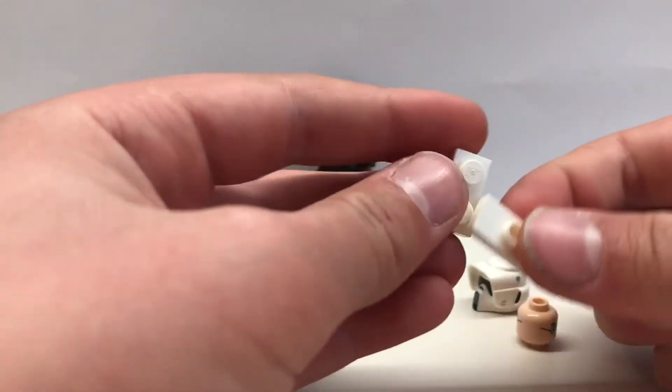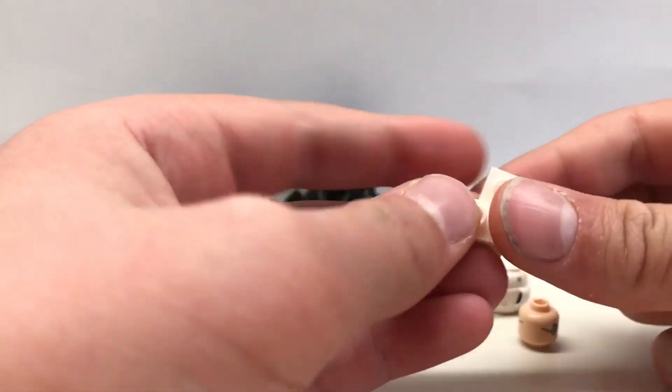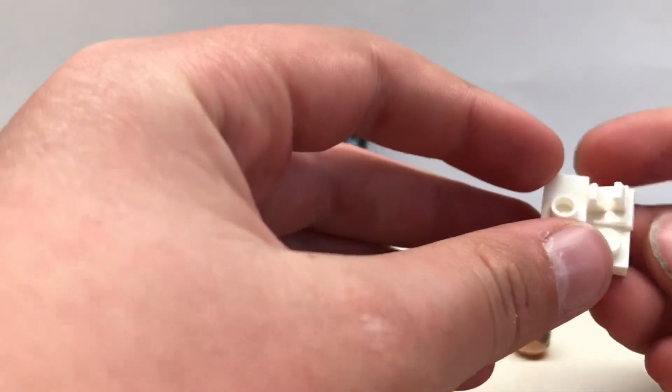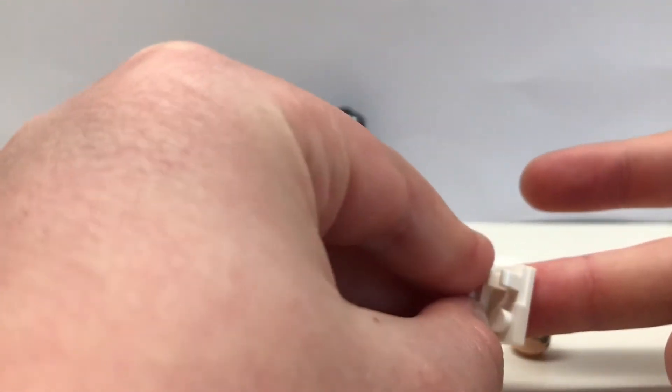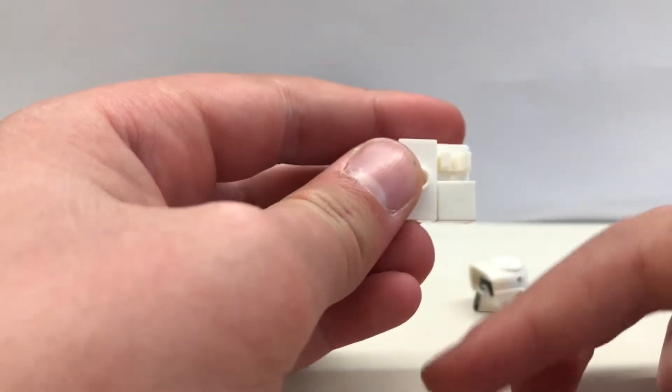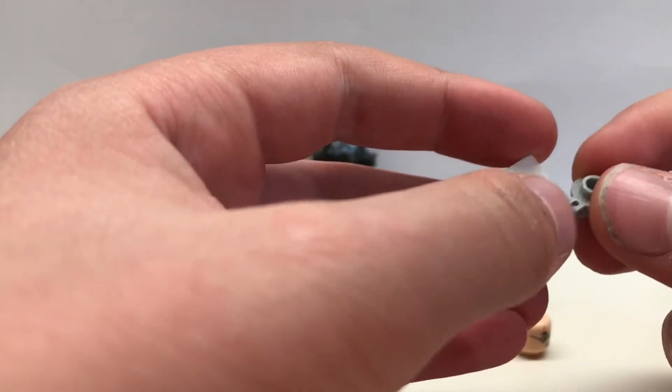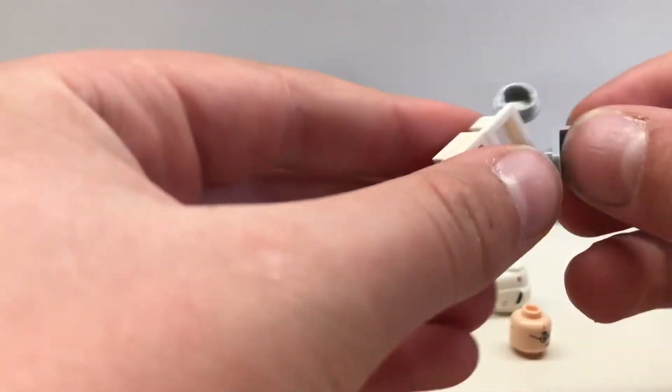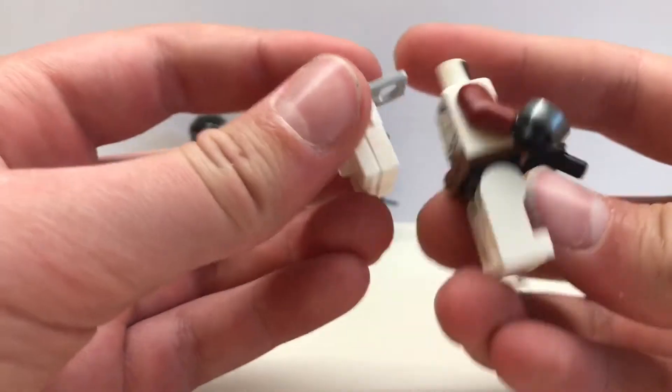And then you make it like so, by putting the 1x2 underneath the 1x2 jumper, then you put the modified 1x2 there, then the flat stud there, then this modified grey stud here, and then the black grey neck bracket here.